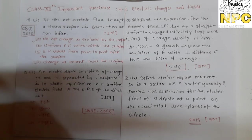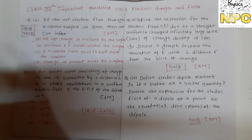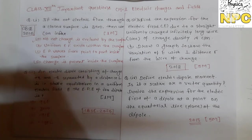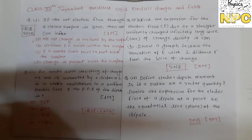You also need to draw a graph between E and R. So this question is a 5-mark question, meaning you need to do the complete derivation plus show the graph. This question appeared in 2018.